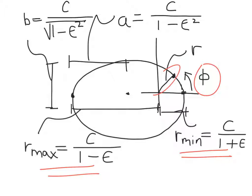So when the objects are a distance r min away from one another, that's called the pericenter, the closest point in the orbit. When the radial distance between the two objects is r max, that's called the apocenter. That's when the two objects are as far apart as they can be.